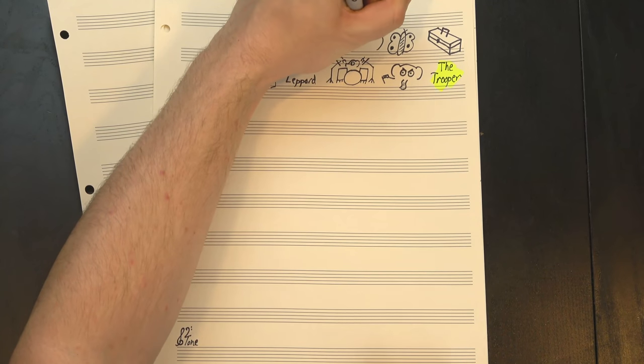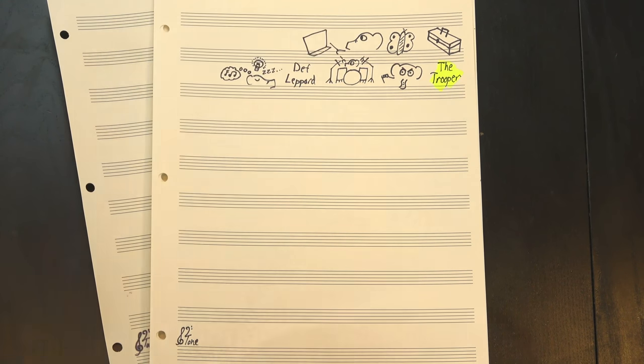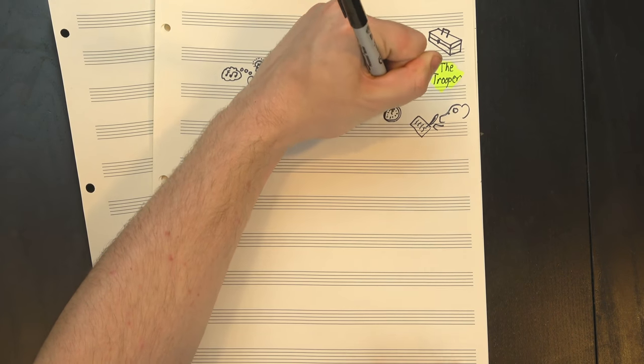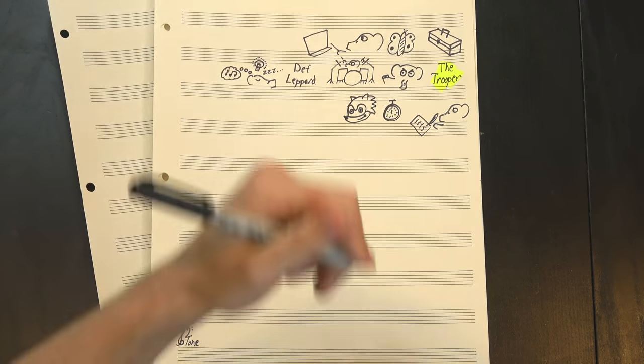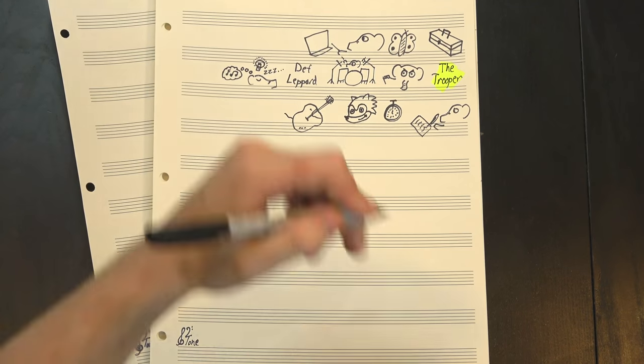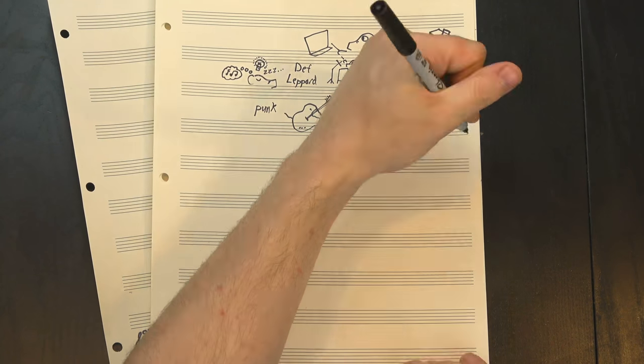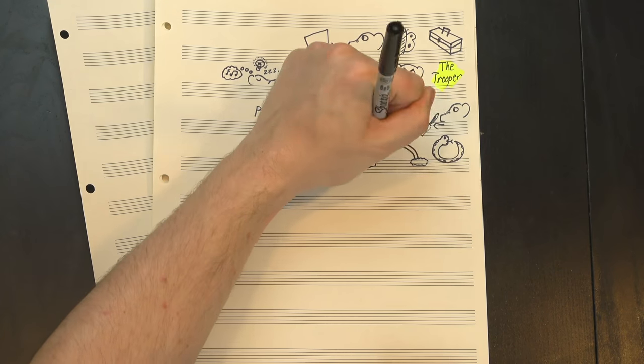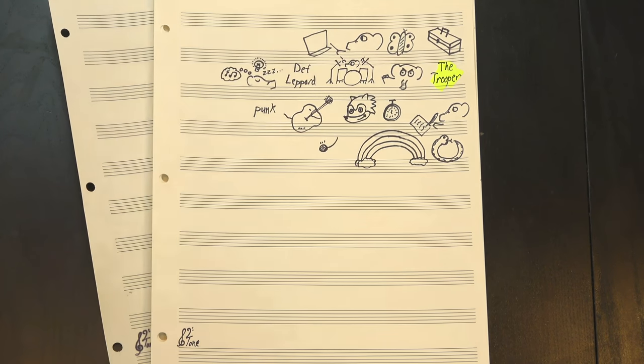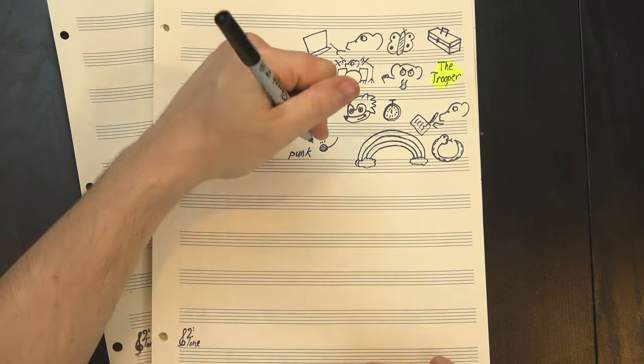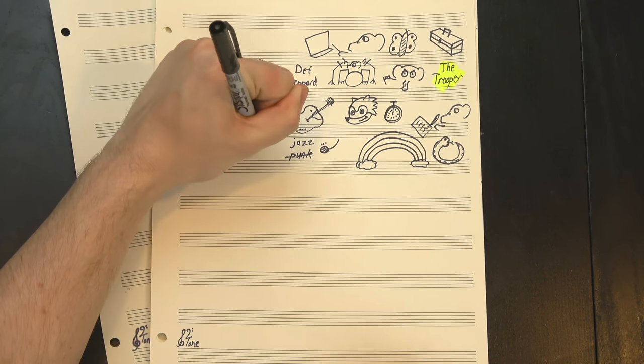But before we get into that, we need to talk about what genres actually are. Most obviously, they're a set of compositional practices. Like, if I tell you a song is two minutes long at 240 beats per minute and it features distorted electric guitars playing the same three power chords over and over, you might guess that I'm describing a punk song, whereas if instead I tell you it's got a repeating 32-bar form, lots of complex colorful harmonies, and a swung rhythmic feel, you might guess it was... another punk song. I mean, you'd be wrong, it's probably jazz, but hey, I can't stop you from guessing.